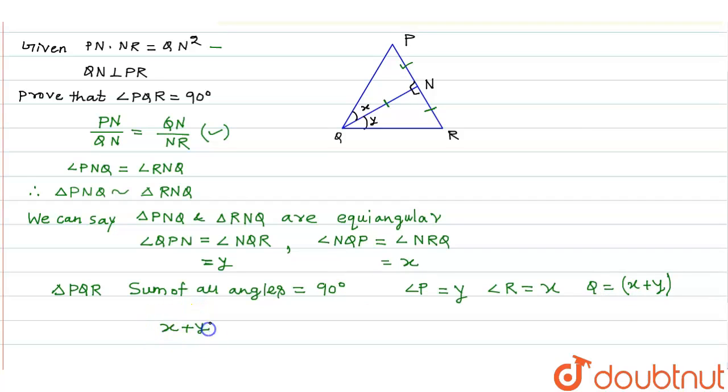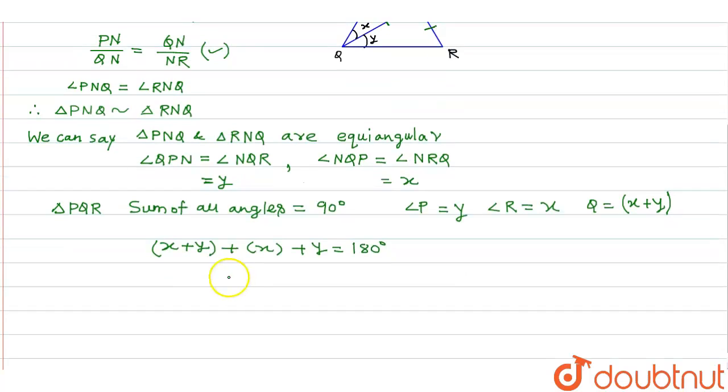X plus Y plus X plus Y is equal to 180 degrees. Now this becomes twice of X plus Y is equal to 180 degrees, so we get X plus Y is equal to 90 degrees.